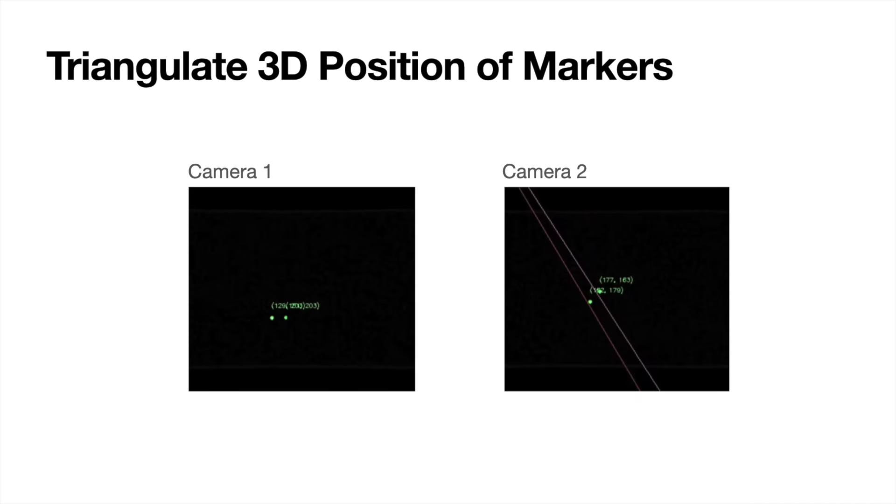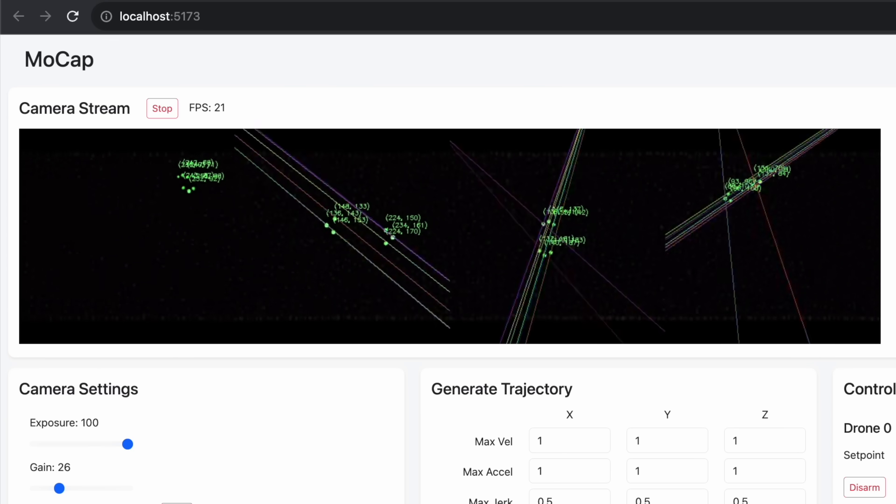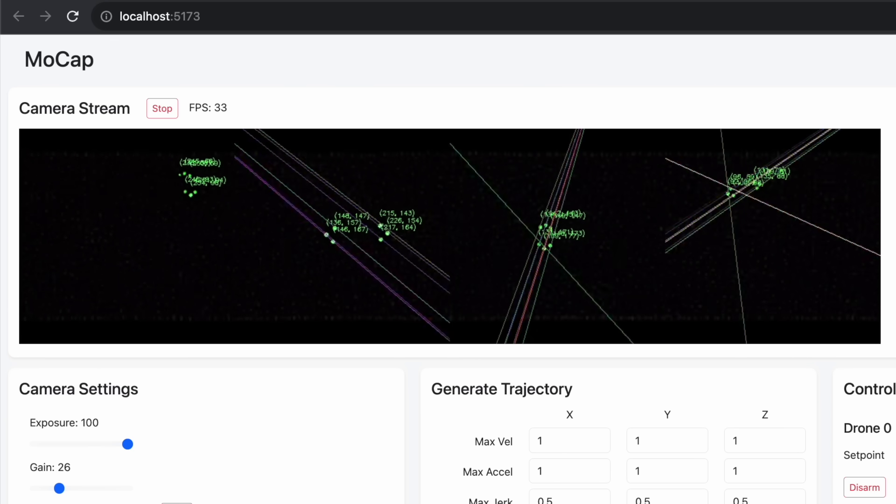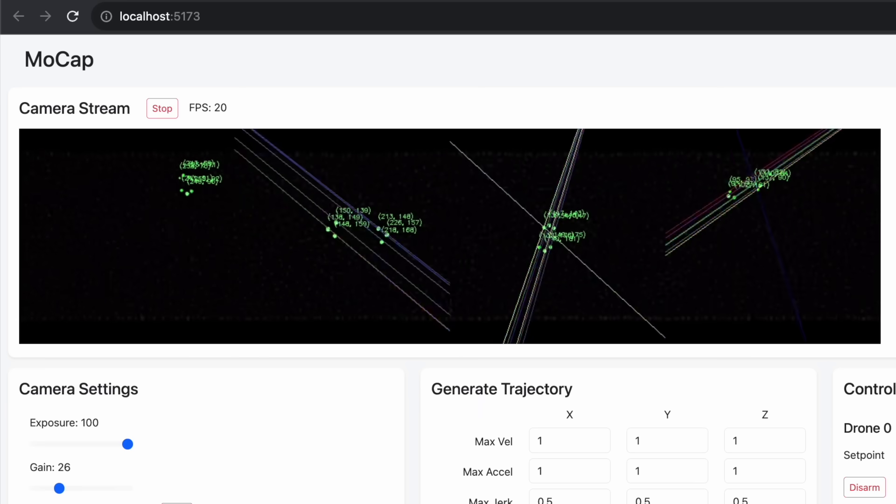Using this epipolar line, we find possible sets of image points which could correspond to each world point. We then calculate the reprojection error for each one of these sets of image points and choose the one with the lowest total error. This allows my system to be tolerant to some cameras not being able to see an infrared marker or markers overlapping with one another and merging into one blob.